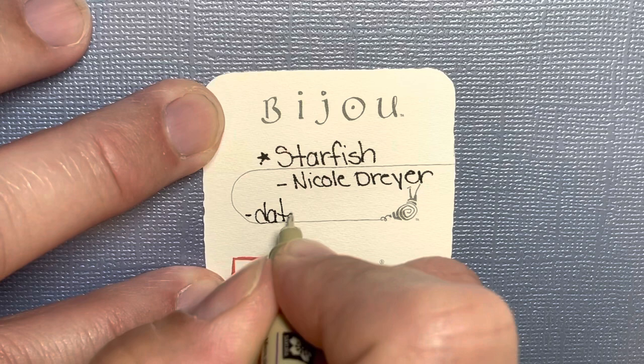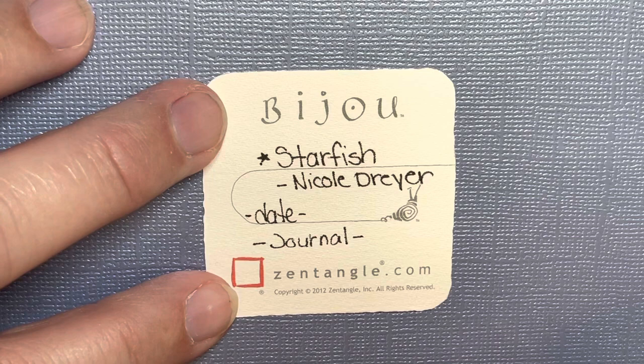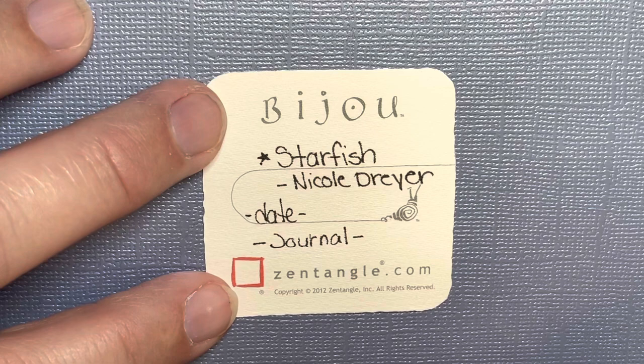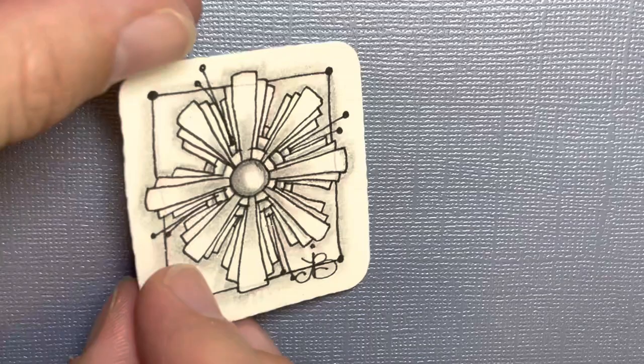I always write the date and then I also like to write a little journal entry where I write what's going on in my life, what season it is, maybe somebody I'm praying for or somebody that's on my heart so I'll write the date and a little journal entry so I can look back on this and remember what I was thinking about as I was making it.